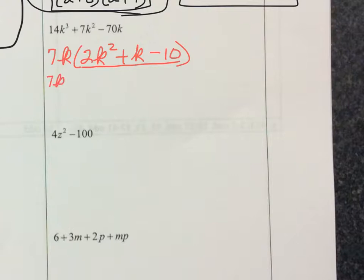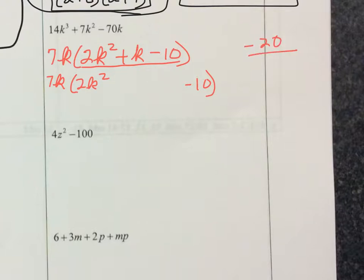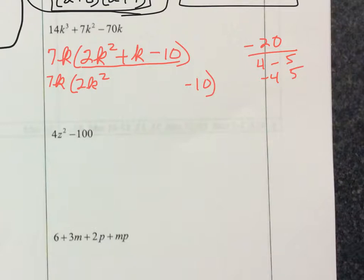We bring our 7k down, leave 2k squared and negative 10 alone, and rewrite the k term to get four terms. 2 times negative 10 is negative 20. The square root of 20 is about 2.8, so we check 4: does it go into 20? Yes, 5 times. It's either 4 times negative 5 or negative 4 times 5. Negative 4 plus 5 gives positive 1, so we write negative 4k plus 5k.